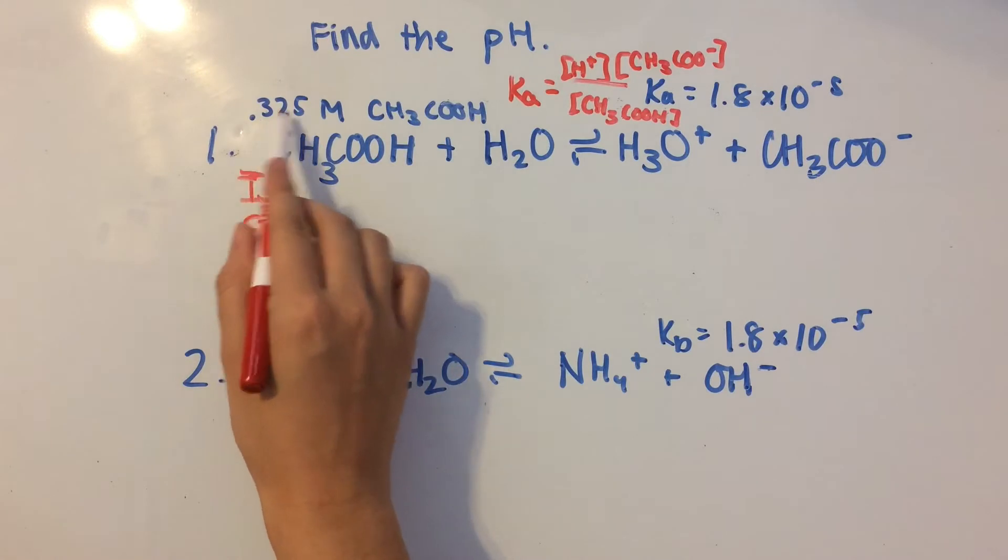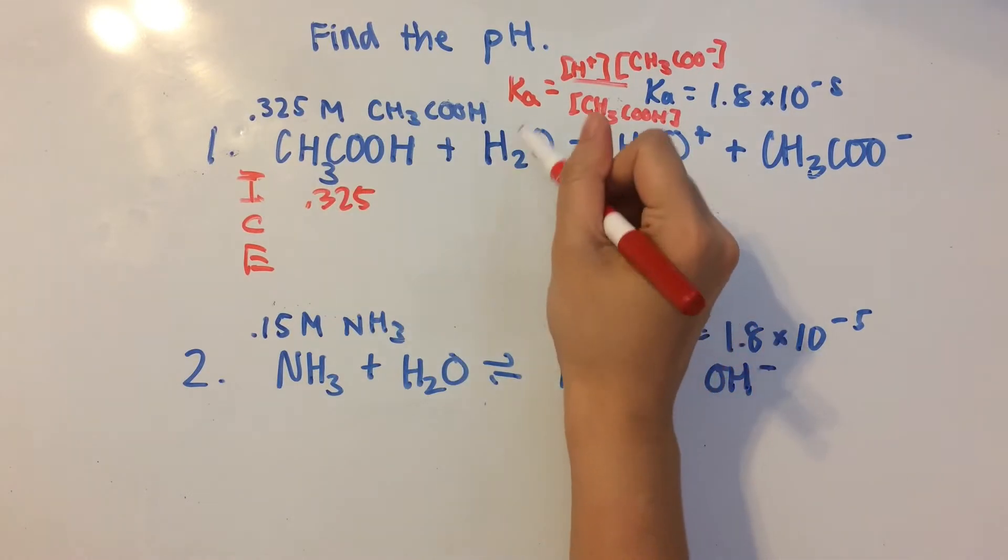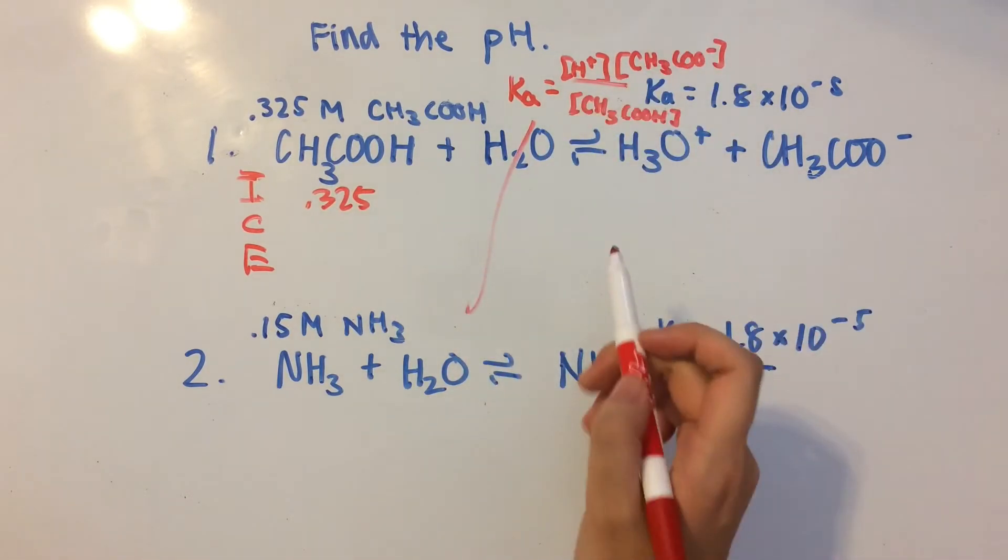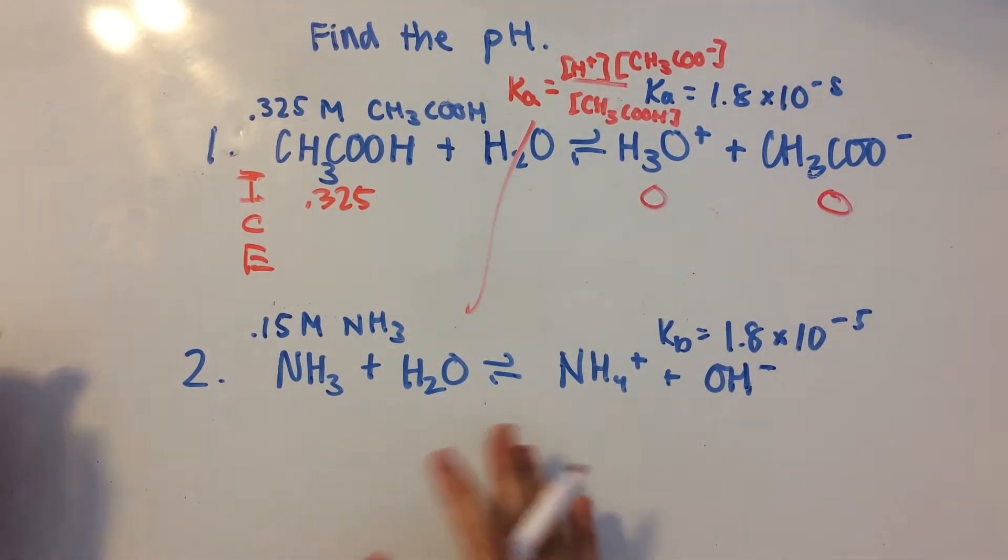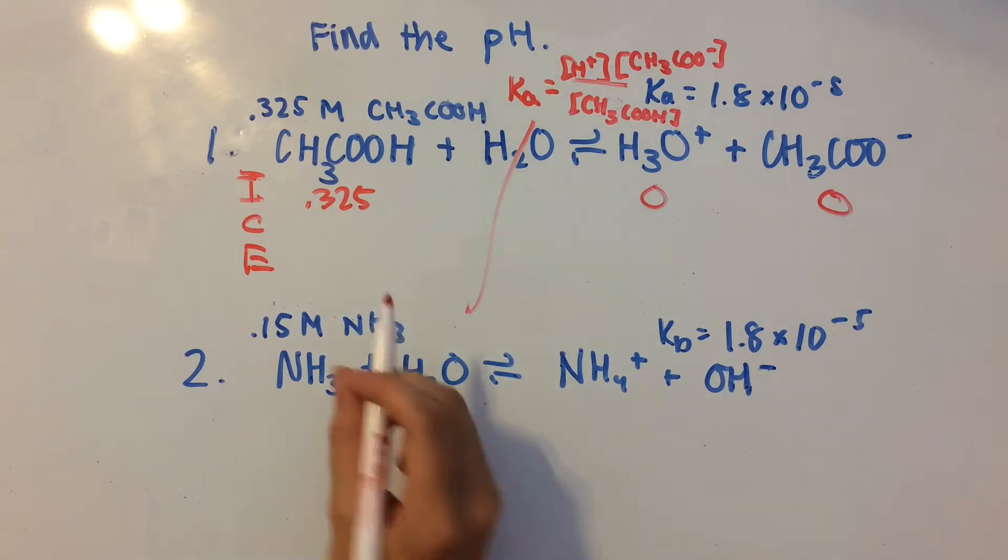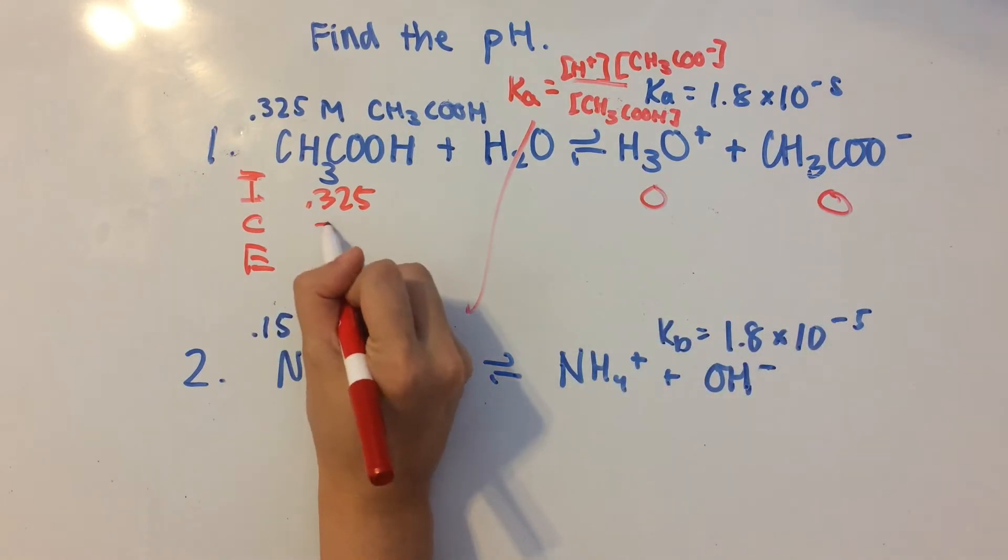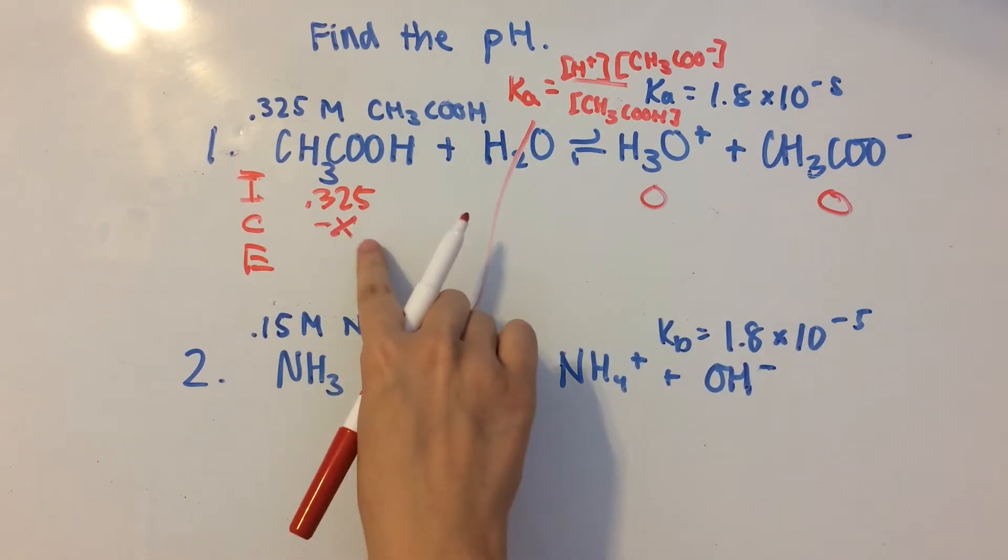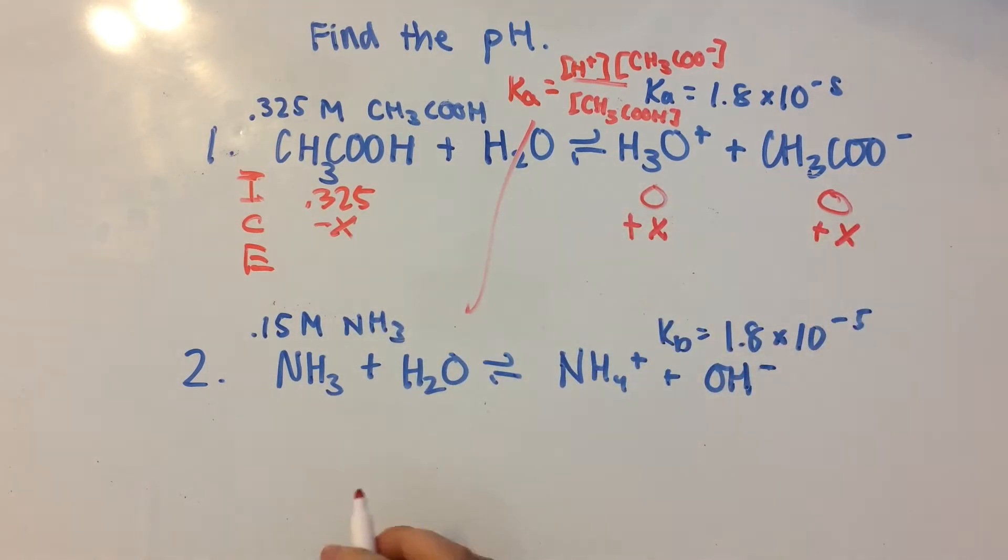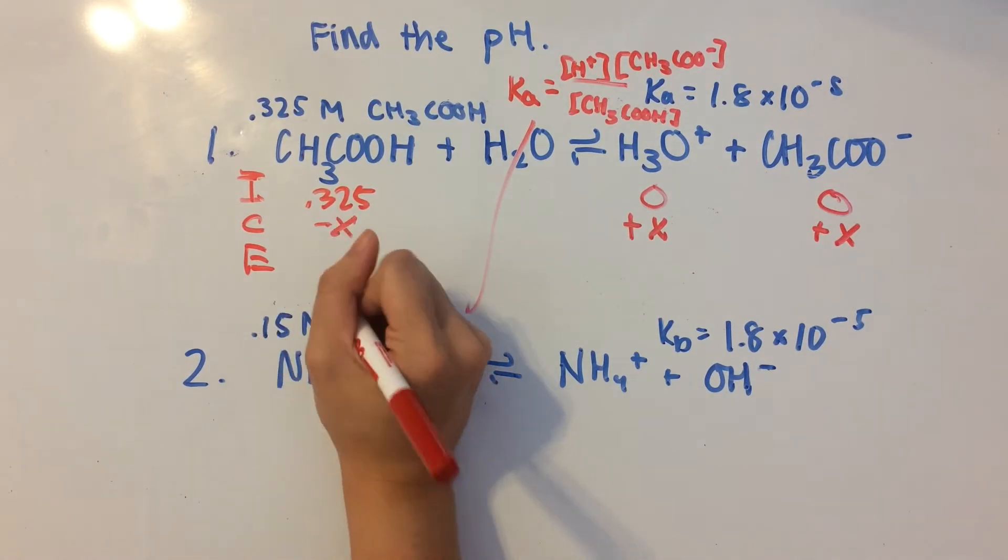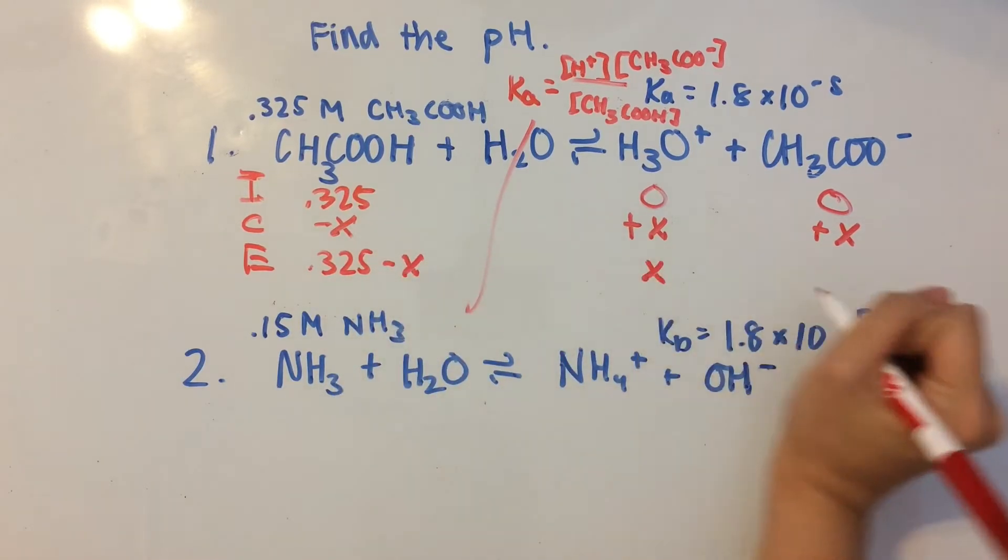So we're given that the acetic acid is 0.325 molar. H2O isn't included in the equilibrium expression. And then these are just going to be 0 because we're only starting out with acetic acid. And then here we see that the coefficients are all 1. So x amount of acetic acid is going to be lost and changed into H plus and acetate. So now we have the equilibrium expressions are 0.325 minus x, x, and x.